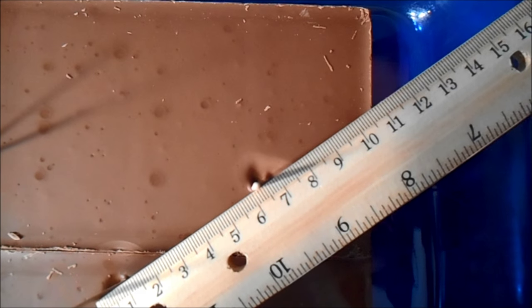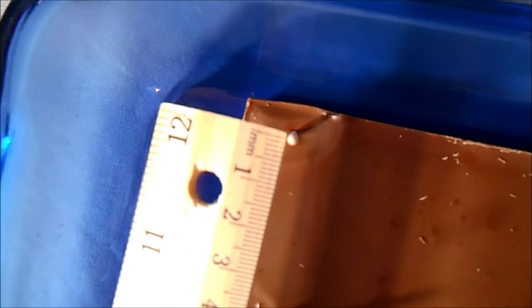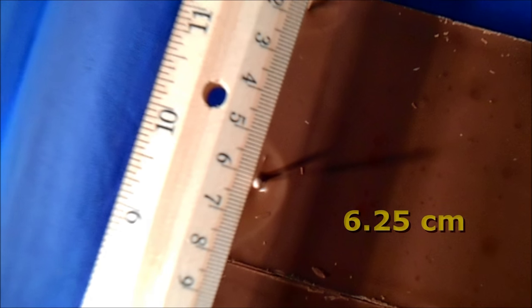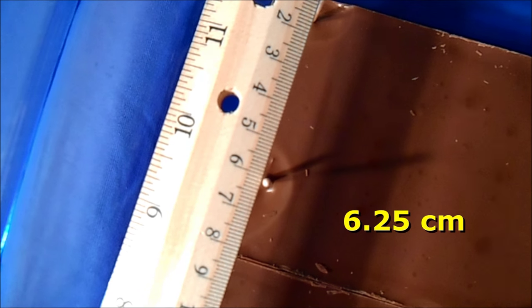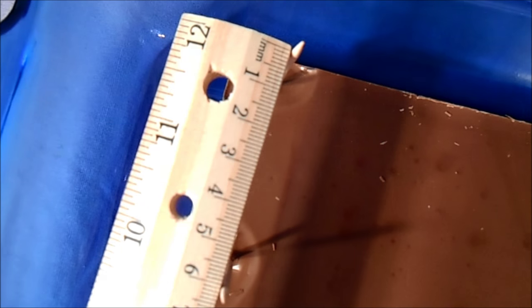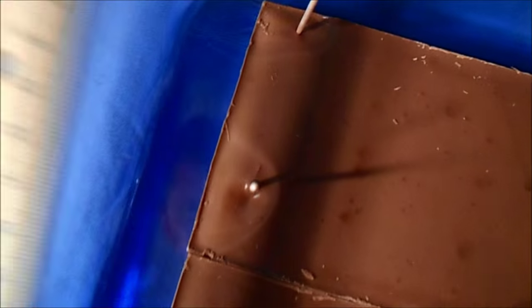And because I have two other melted spots on my chocolate, I can take a second measurement and we'll just average these together. This one looks to be between 6.2 and 6.3, so I'm going to call it 6.25 centimeters. Now with those lengths, and with our frequency, we can calculate the speed of light.